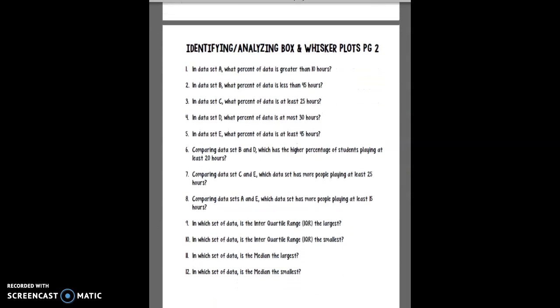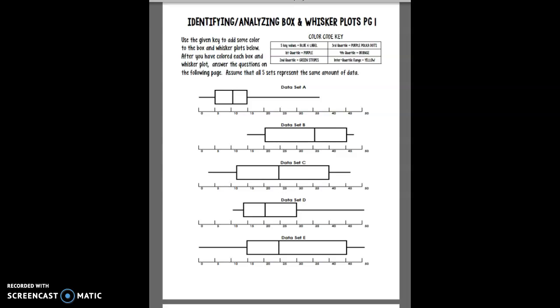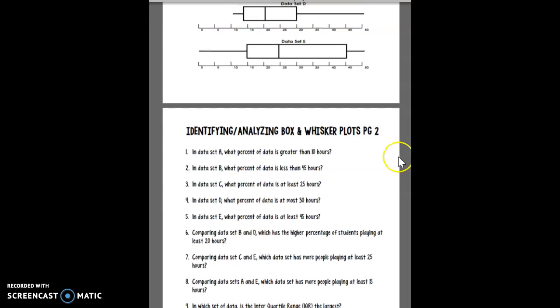It says in set A what percent of the data is greater than 10 hours. So let's see, 10 hours is here which is the median. So I know that 50% of the data is that direction and 50% of the data is that direction. Because the median is the middle. So this is going to be 50%.